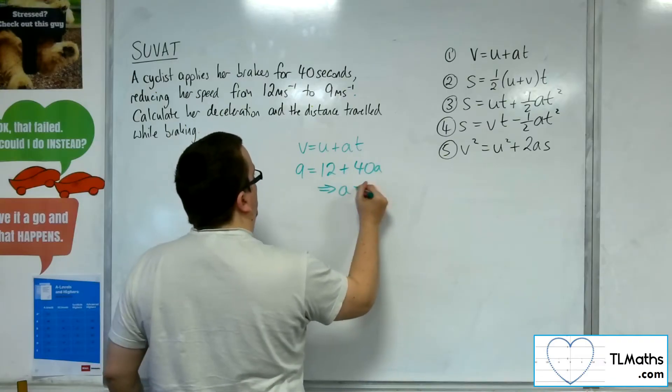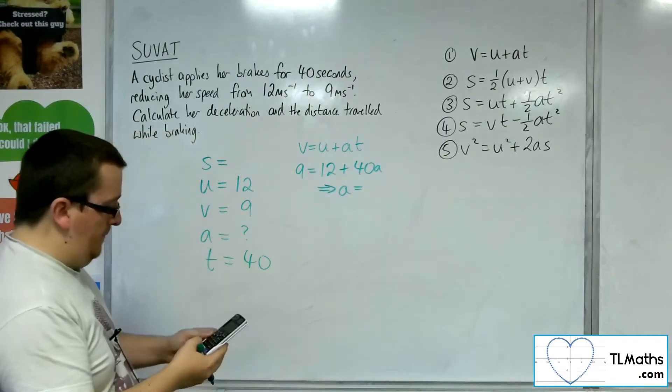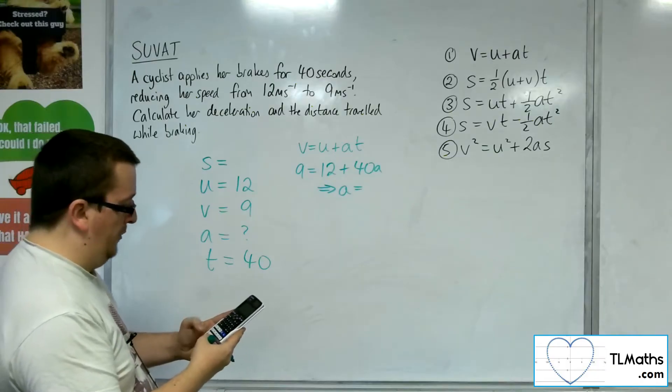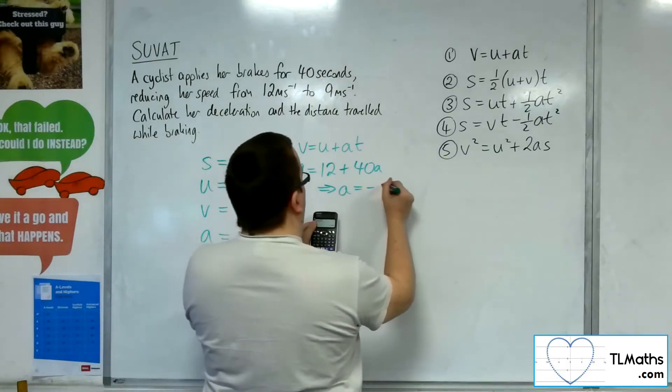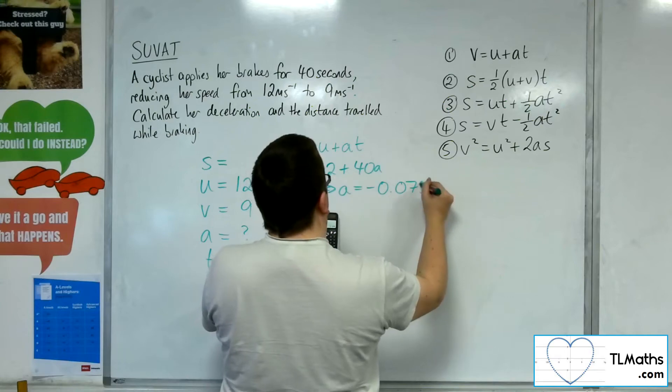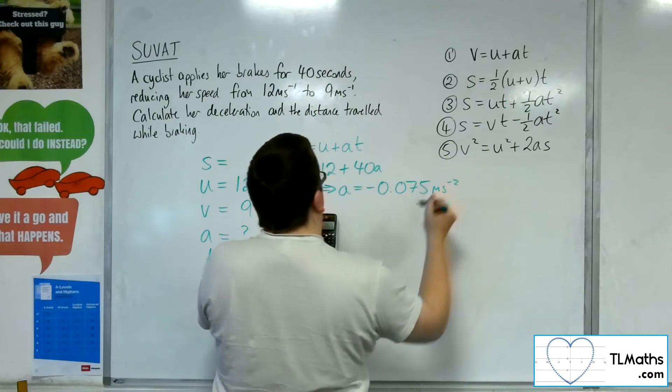So that means that gives me an equation where I can rearrange to get A. 9 take away 12, and then divide that by 40, and I get minus 0.075 metres per second per second.